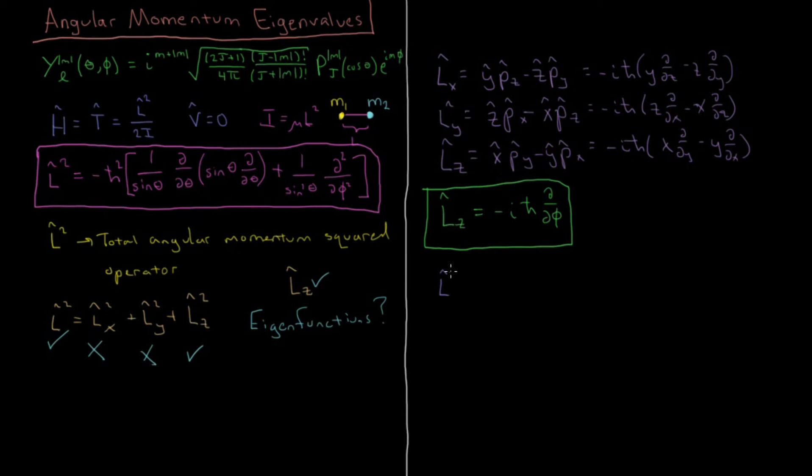But if we take the operator L squared, and we act on a spherical harmonic of say L M, or J M, whichever you prefer, what you're going to get if you slug through all of that algebra is that you're going to get H bar squared times L, if I'm using L, times L plus 1, or J times J plus 1,